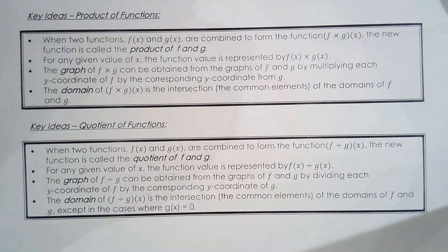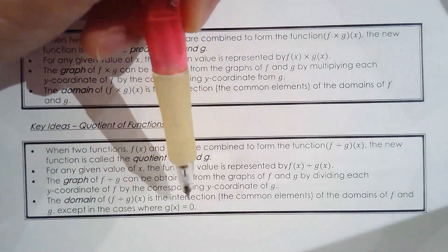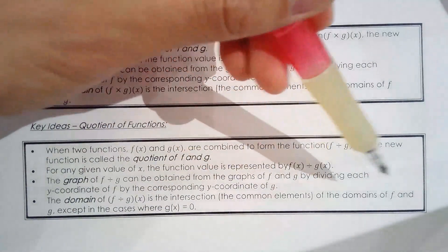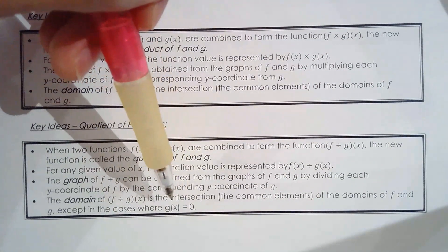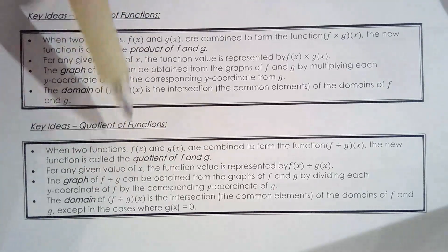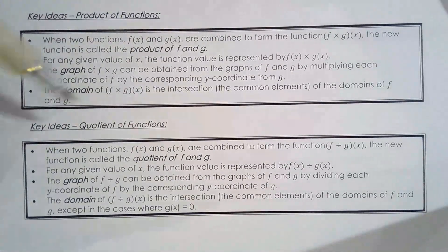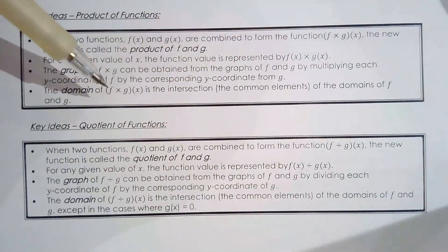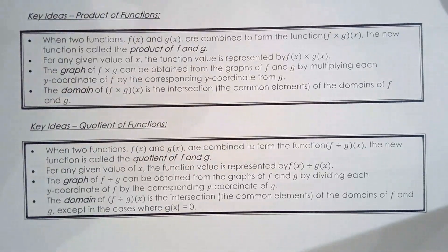Everything we said about the product can be applied to the quotient of f and g, except for one thing: the domain of the quotient requires not only the common elements between the domains of f and g, but you also have to consider where g of x equals zero, because f over g is not defined when g of x is zero — you can't divide by zero. Everything else is the same: find the y-coordinates of the quotient by dividing the y-coordinates of f and g.